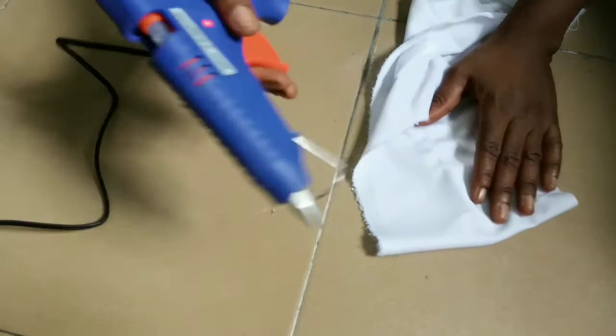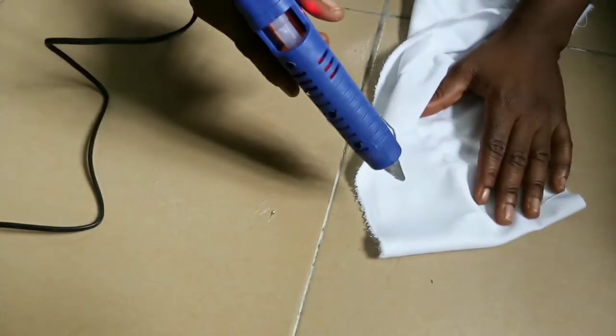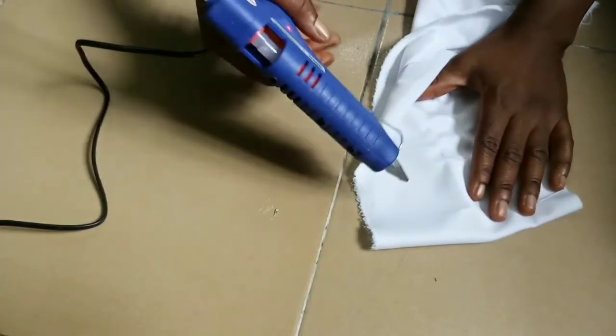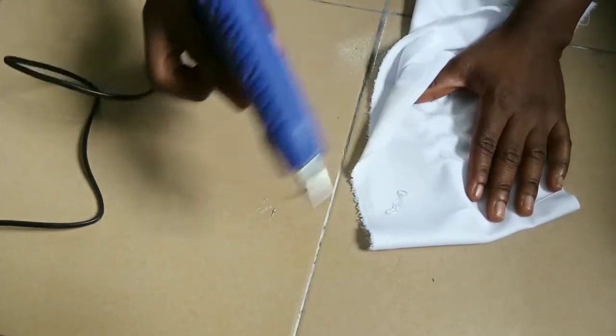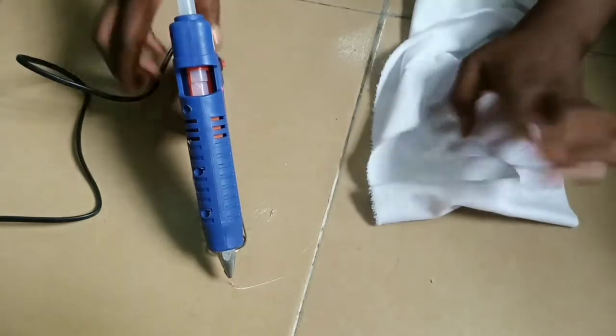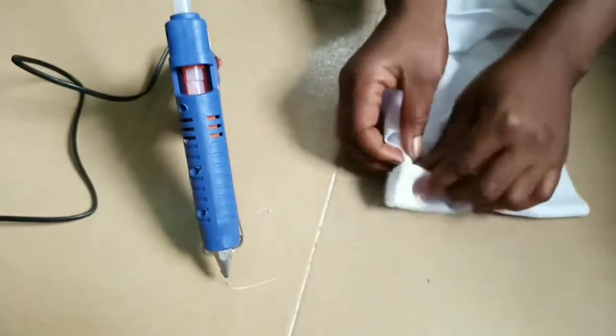So now to use it, just press here like a gun. You know with a toy gun, you just press here. You can see the liquid coming out. Then you glue whatever you are gluing.